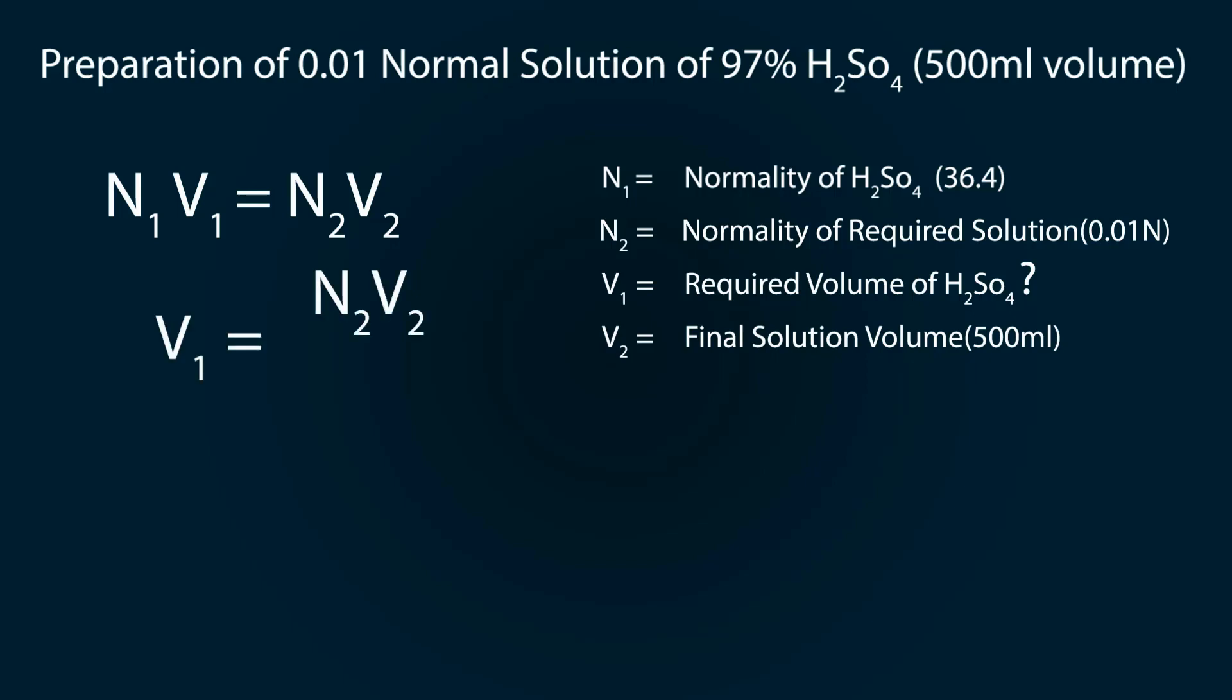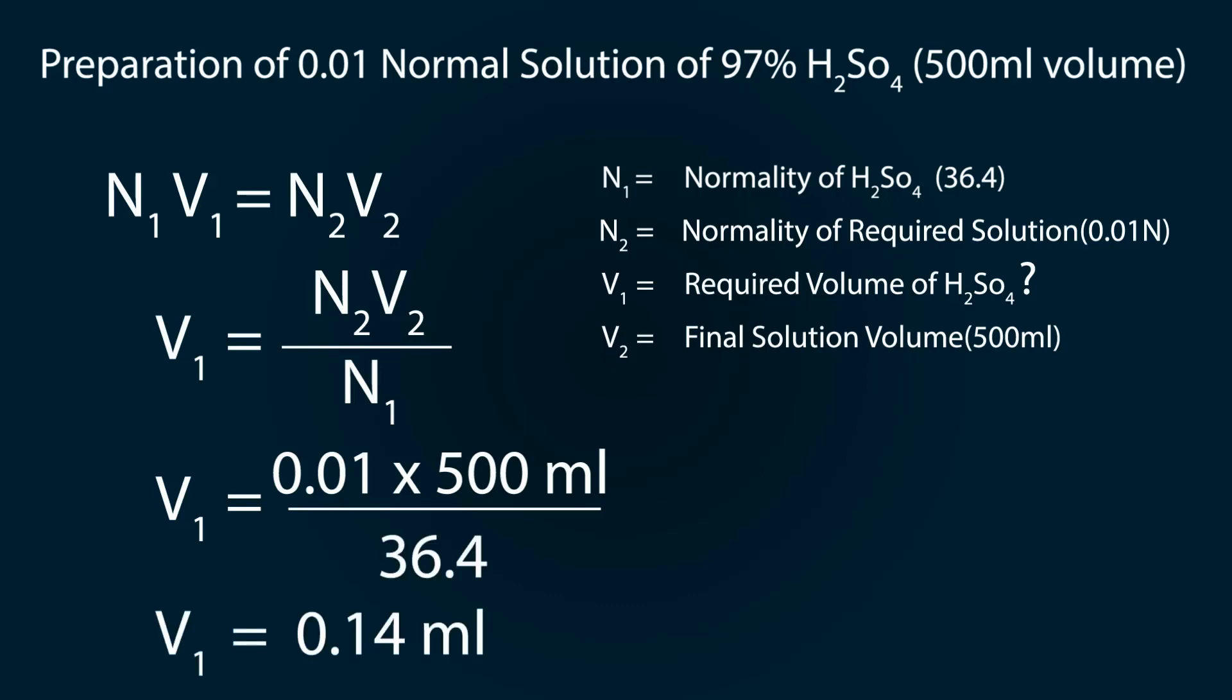Let's start our calculation. So V1 equals N2V2 divided by N1. Put the values: 0.01 with N2, 500ml is V2, divided by normality which is 36.4. So we get V1 equals 0.14ml.